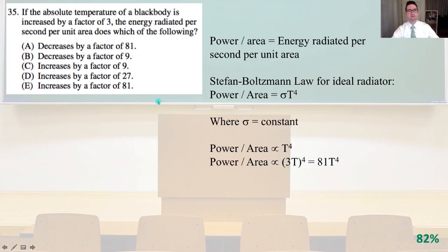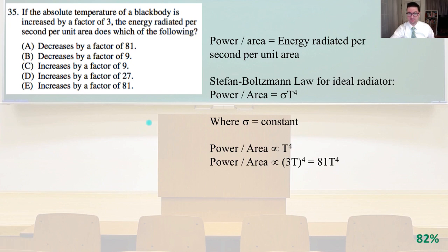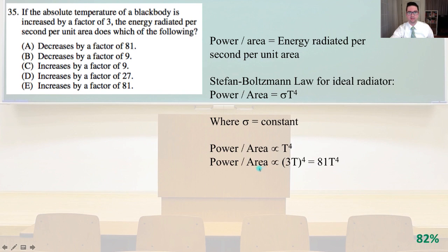Number 35. If the absolute temperature of a black body is increased by a factor of three, the energy radiated per second per unit area does which of the following? Power divided by area equals the energy radiated per second per unit area. The Stefan-Boltzmann law for an ideal radiator is power over area equals sigma times T to the fourth. So power over area is proportional to T to the fourth. If you increase the temperature by a factor of three, you have 3T raised to the fourth, which is 81 T to the fourth — so it increases by a factor of 81.